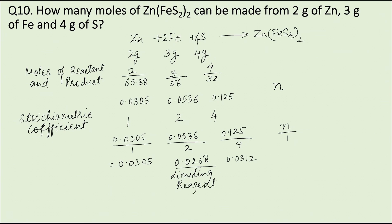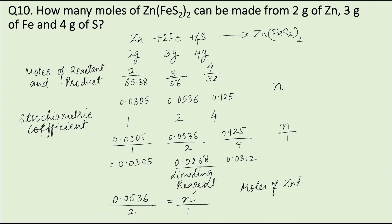The amount of Zn(FeS₂)₂ formed depends upon the moles of iron. So: moles of iron / stoichiometric coefficient = moles of Zn(FeS₂)₂ / its stoichiometric coefficient, giving 0.0536 / 2 = N / 1. Therefore, moles of Zn(FeS₂)₂ = 0.0268 moles.